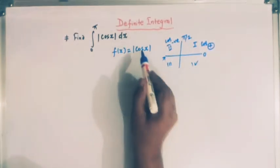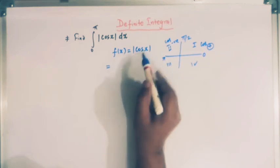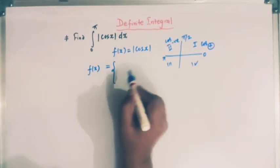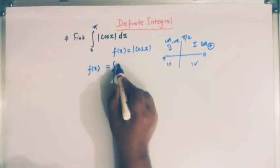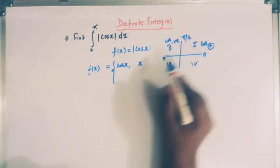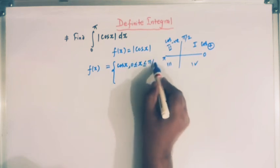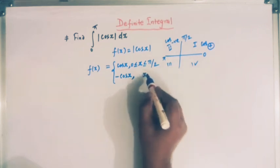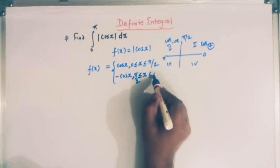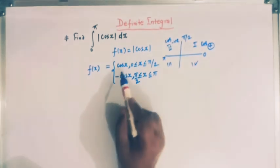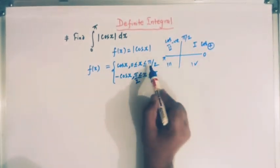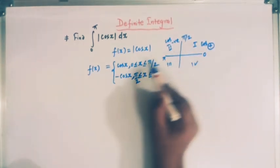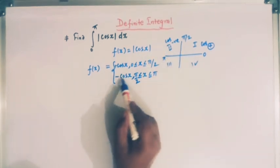So what we will do is express this function, mod of cos x, over the intervals from 0 to pi by 2 and from pi by 2 to pi. So f of x can be expressed as: mod of cos x equals cos x if x belongs to the interval from 0 to pi by 2, and mod of cos x equals minus cos x when x lies between pi by 2 to pi. So we have expressed this absolute value function in piecewise form over these two intervals.